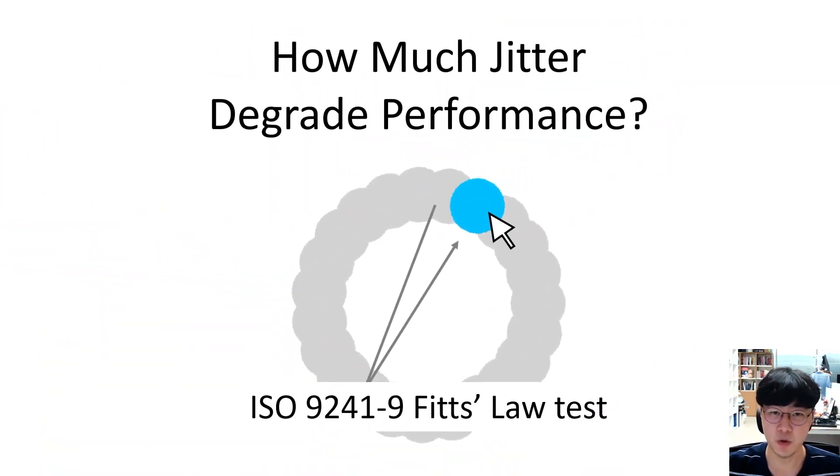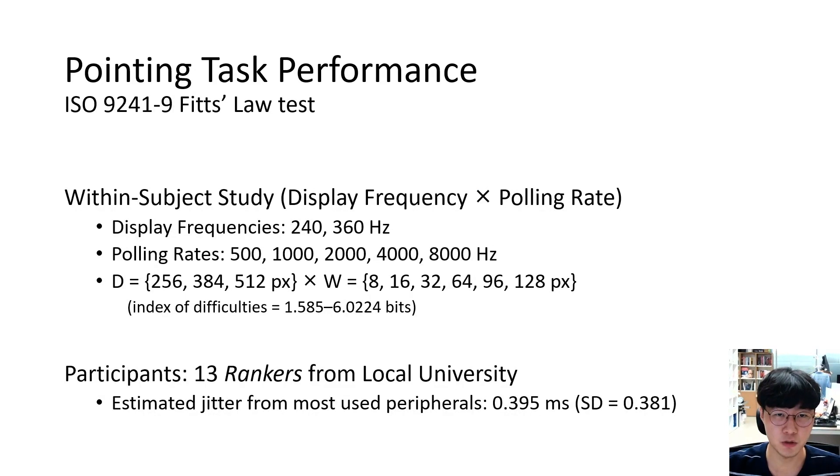After the triangle test, we conducted a standard Fitts' Law test to examine the effect of the jitter level on the pointing performance quantitatively. The experiment used a 2 times 5 within-subject design with two factors, display frequency and mouse polling rate. Under each jitter condition, 18 combinations of 3 amplitudes and 6 target widths were set. Nine ranker participants were recruited who are or were ranked in the top 20% players of games demanding extensive mouse control skills.